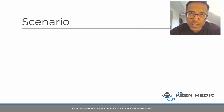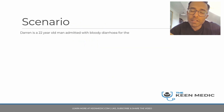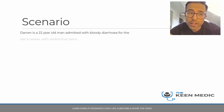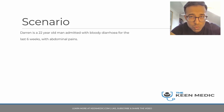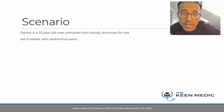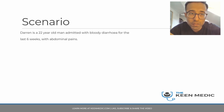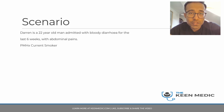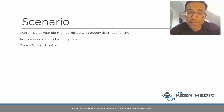The scenario: Darren is a 22-year-old man admitted with bloody diarrhea for the last six weeks with abdominal pain. So quite a young man with abdominal pain and diarrhea for six weeks. His past medical history shows he's a smoker — been smoking for a few years — but other than that he is fit and well.